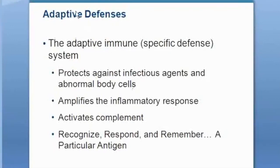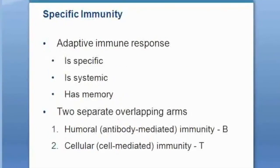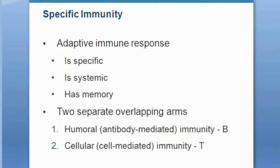This is sometimes called adaptive immunity, but we'll refer to it as specific immunity. It's called specific because it's specific — it has to recognize, respond, and remember a particular pathogen. It's specific for one pathogen, or frankly, even one antigen on that pathogen.